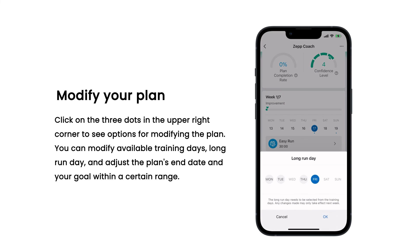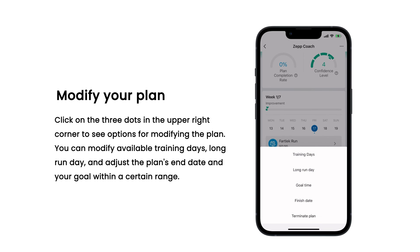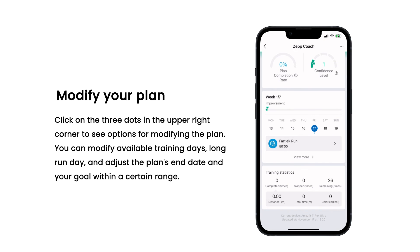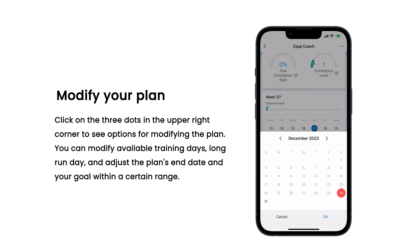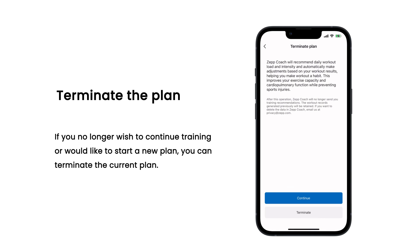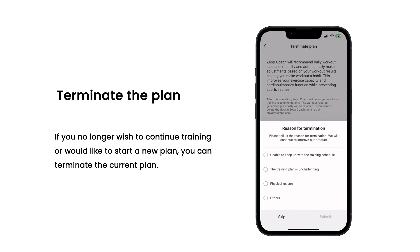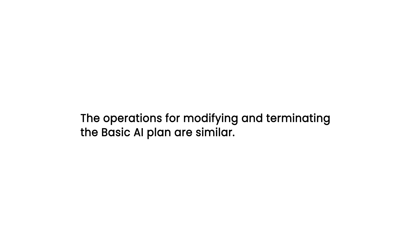Click on the three dots in the upper right corner to see options for modifying the plan. You can modify available training days, long run day, and adjust the plan's end date and your goal within a certain range. If you no longer wish to continue training or would like to start a new plan, you can terminate the current plan. The operations for modifying and terminating the basic AI plan are similar.